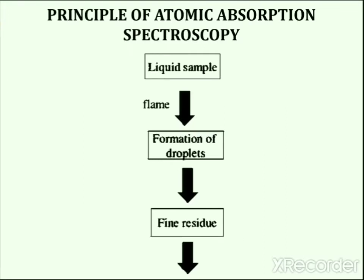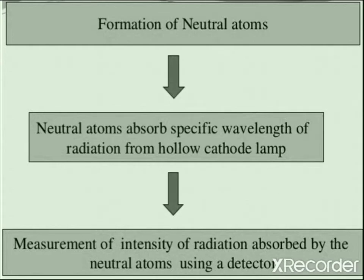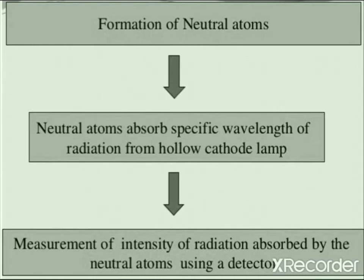In Atomic Absorption Spectroscopy, when a liquid sample is introduced in a flame, it is vaporized leaving a solid sample residue. The solid sample residue is then converted to an atomic state. Radiation from a specific light source is focused on the atomic vapor in the flame. The light radiation enters a monochromator which isolates the line of interest, is measured by a photomultiplier tube, and the signal is processed and the computer system prints the output on screen.